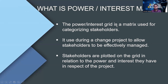We can use the Power Interest Matrix to categorize stakeholders. The power interest grid is a matrix used for categorizing stakeholders. It is used during a change project — though other project types can use it too, it gives more accurate results in a change project. Stakeholders are plotted in the grid based on their power and interest in respect of the project.